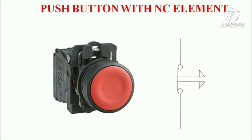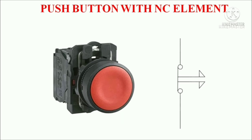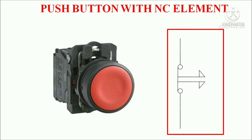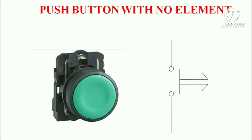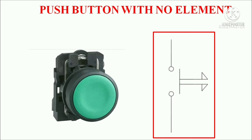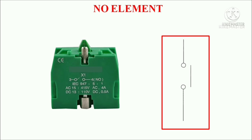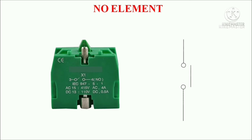Symbol of push button with NC element. Basically we use a red color push button with NC element. The physical appearance of push button is shown here, and the symbol of push button is shown here. Push button with NO element — basically we use a green color push button with NO element. The physical appearance is shown here, and the symbol of NO element is shown here. We have already uploaded a video related to NO and NC elements — for detail please watch that video.